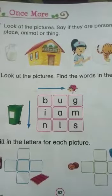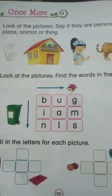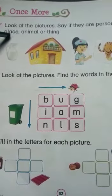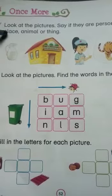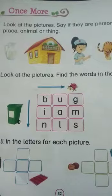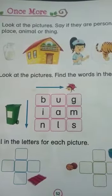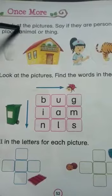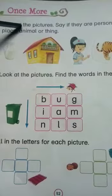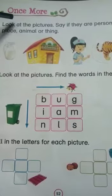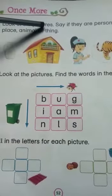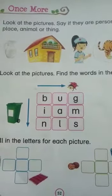First of all, person means a person. Place means a place — jaga. For example: park, station, house, hotel. Animals means animal. Thing means something — a thing.